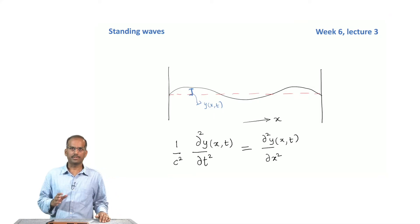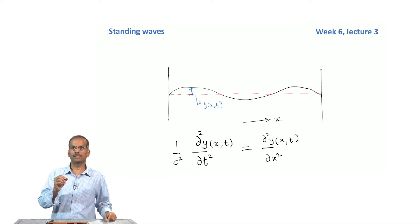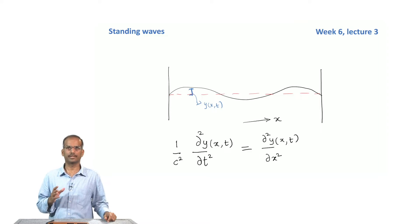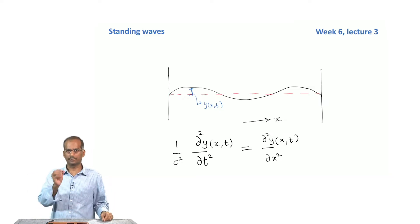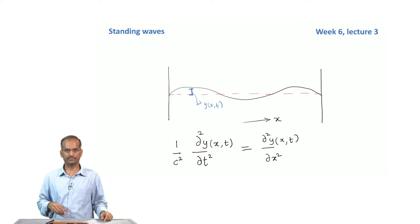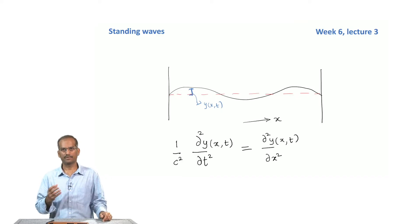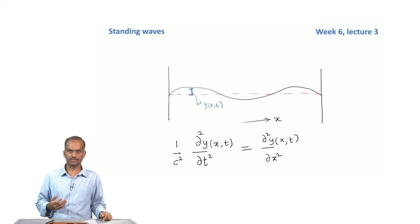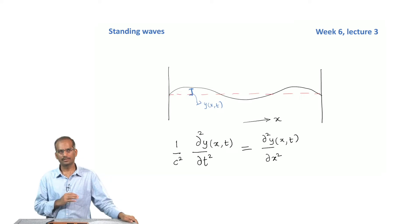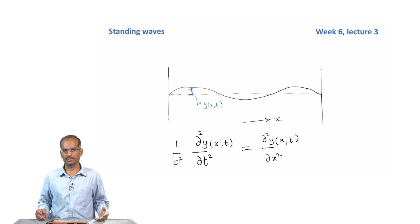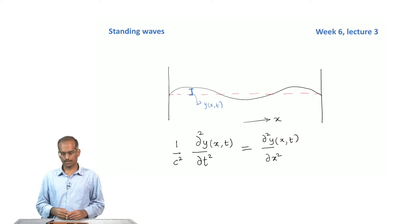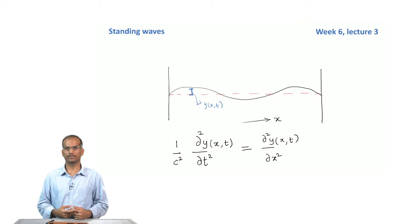We also re-derived the same equation by considering a small segment of an oscillating string. You look at the forces acting on that small segment and from that derive an equation of motion called the wave equation. An important input is that we are still considering small amplitude oscillations, and we will continue to look at small amplitude oscillations.